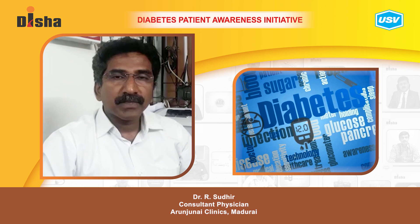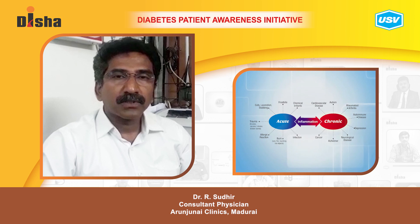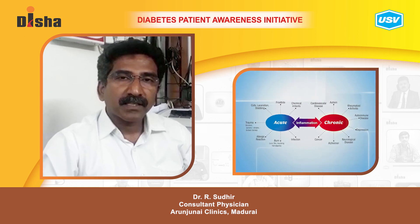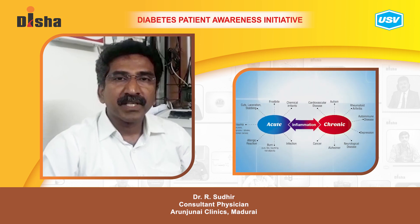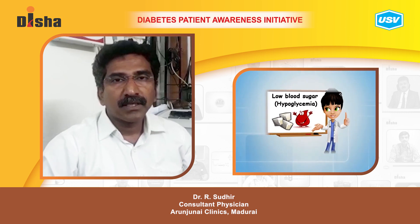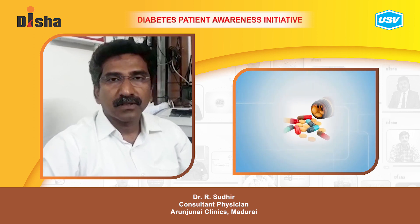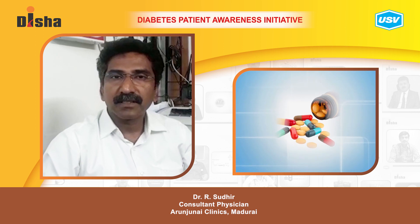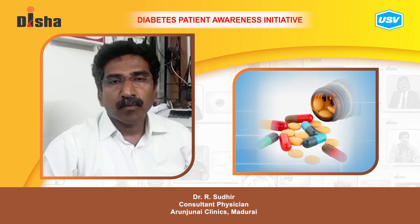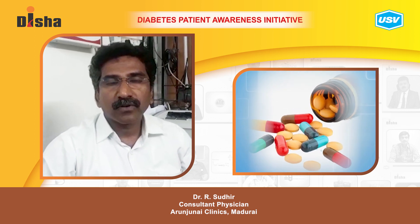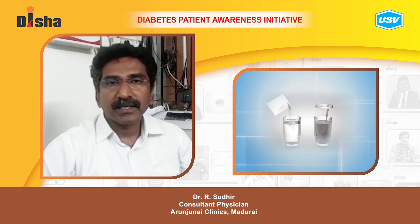Complications of diabetes can be separated as acute and chronic. Acute complications include hypoglycemia and hyperglycemia emergencies. Hypoglycemia — low blood sugar — occurs due to patient or medication factors, such as excess dose or not adhering to proper meal patterns. This is generally corrected with just a sugary drink or something to eat.